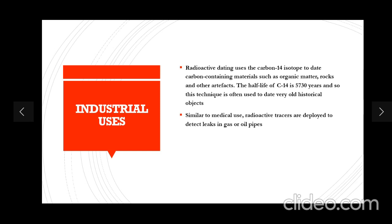Similar to medical use, radioactive tracers detect leaks in oil or gas pipes. In medicine, gamma rays are used to detect tumors. Likewise, radioactive traces are deployed to detect leaks in oil or gas pipes. Also, radioactive isotope uranium-235 is used in nuclear power plants in controlled fission reactions.